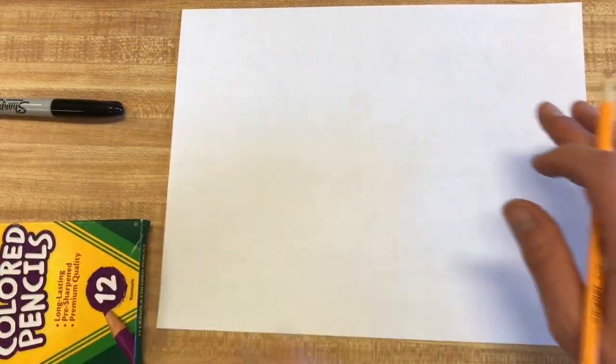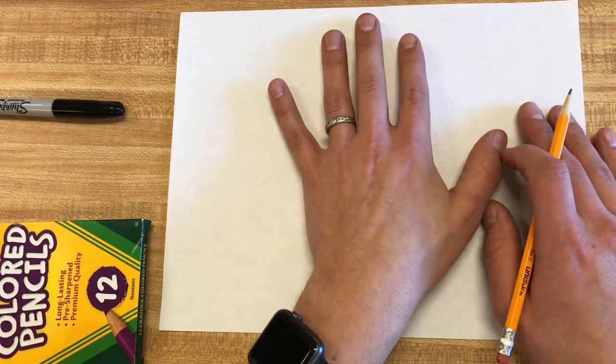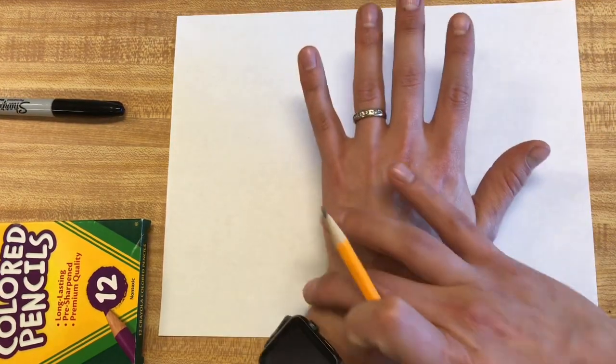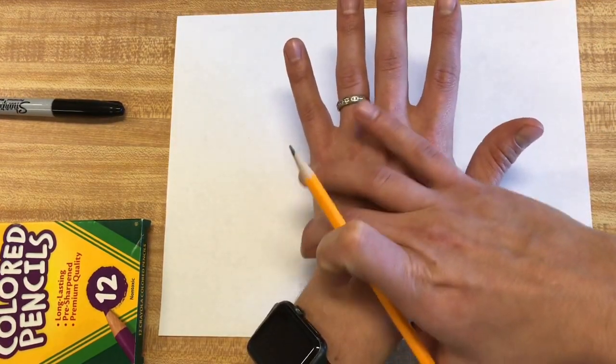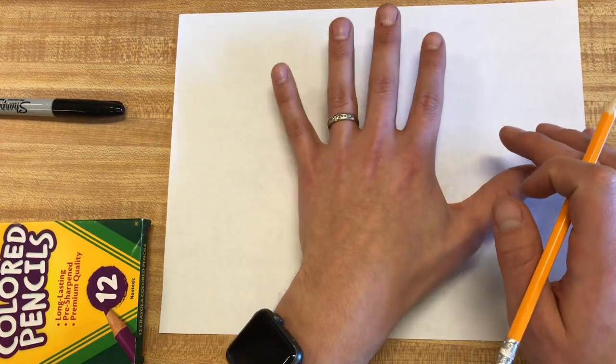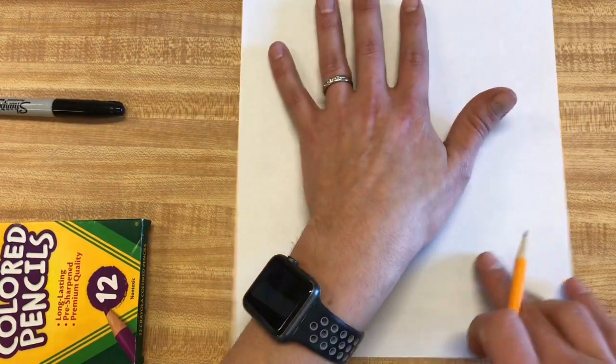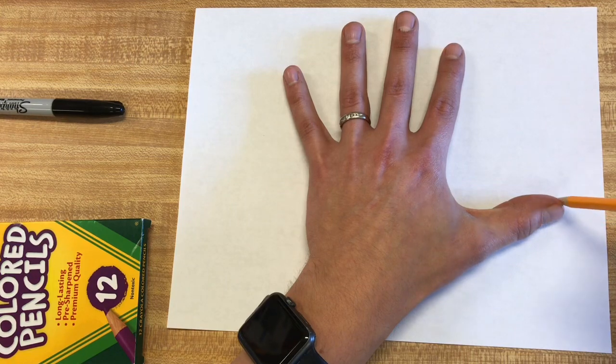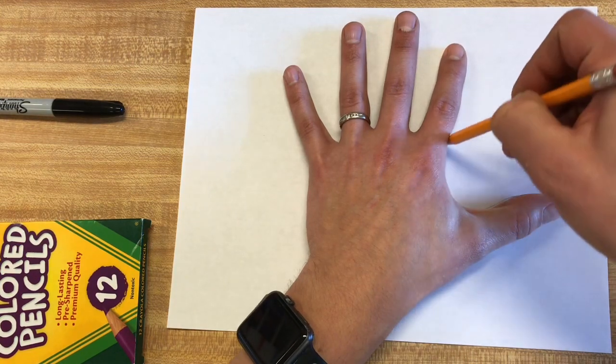The first thing that you want to do is trace your hand. You can add a little bit of your wrist on there if you want, if it fits. I'm going to do it sideways, but you can do it up and down too.